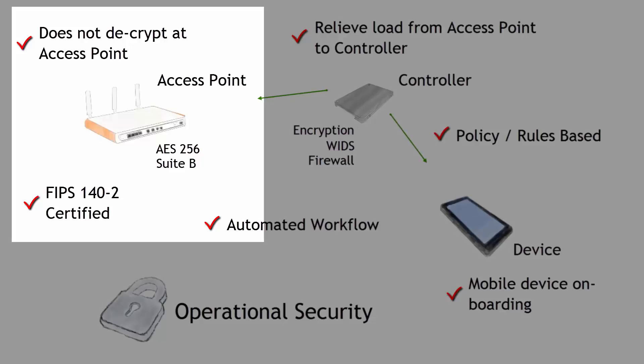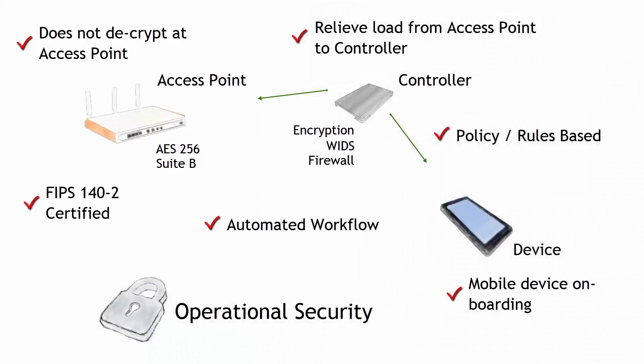Related to encryption at the access point, from an operational expense perspective, this is one of the biggest gotchas in developing a wireless strategy. Imagine if you're running an encrypted environment — which all of you should be, encrypting the data going across your environment. Imagine if you are FIPS 140-2 certified, or even if you're not — how do you ensure that that access point has not been penetrated, that it's not vulnerable, that somebody physically hasn't modified it? To do that, you have to go around and check every access point, because in many wireless solutions, the access point actually decrypts the data.